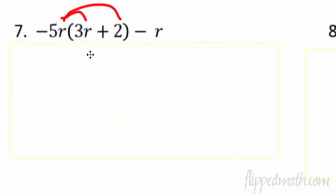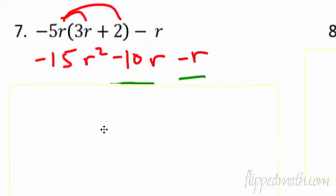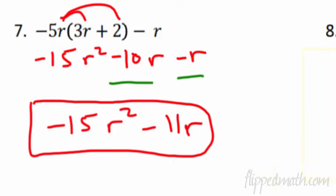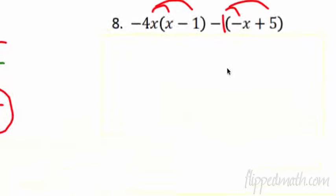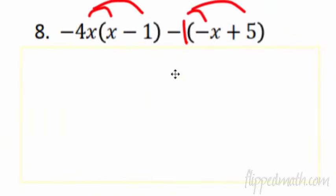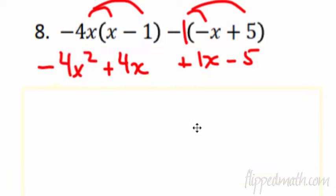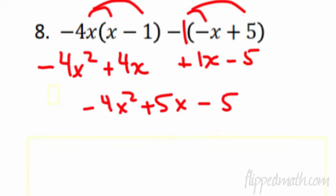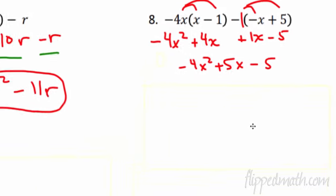Pause the video for the next two. For number 7: start with the distributive property — you get negative 15R squared from R times R. Then minus 10R and a minus R hanging out at the end. That 5 doesn't apply to the minus R because it's not in the parentheses. Combining like terms: negative 10R and negative 1R gives negative 11R. Number 8: negative 4X times X minus 1 distributed plus a negative 1 — giving negative 4X squared plus 4X plus 1X minus 5X. Combining X terms: negative 4X squared plus 5X minus 5.